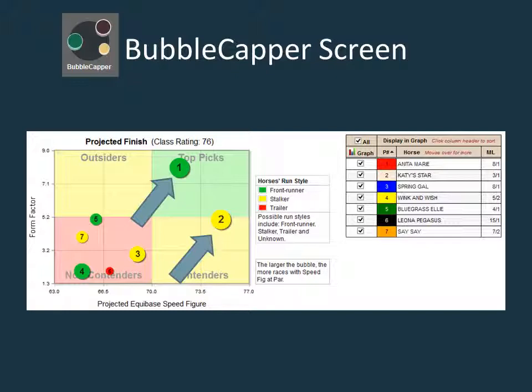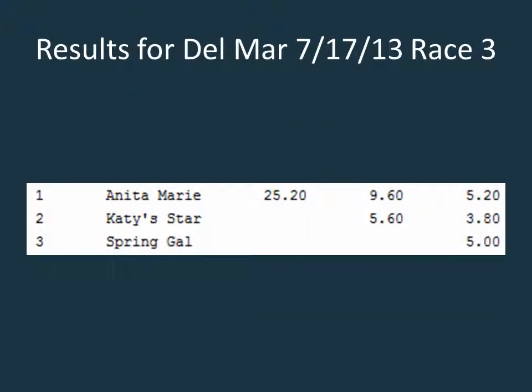For players that like pick threes, pick fives, etc., both horses should be used for this leg. If you were making a win bet, you would have to decide if the higher form factor rating of the one is more important than the higher projected Equibase speed figure of the two. Analysis of the other data screens or the odds of each horse can help you make this choice. In this instance, the one beat the two at generous odds, with the race playing out much as it looked in the bubble capper.